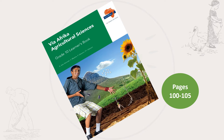If you want to follow along in your textbook, you will find this topic from page 100 to page 115. If you do have an agricultural sciences textbook, bring it along and have a pen and paper so that you can take down some notes. Feel free to pause and rewind whenever you want to.